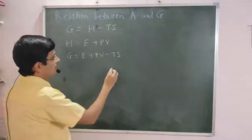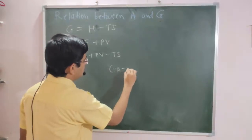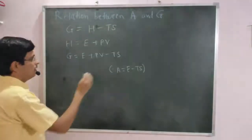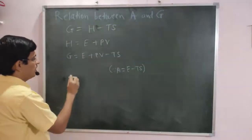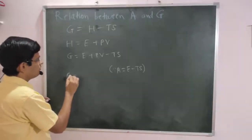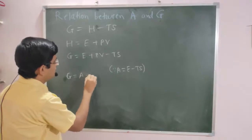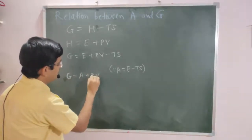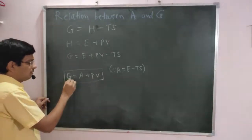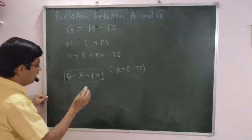Also, we know that the Helmholtz work function A is equal to E minus TS. This is the definition for Helmholtz work function. So by comparing these two equations, we can write G is equal to A plus PV. This equation gives the relationship between Gibbs free energy function G and Helmholtz work function A.